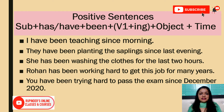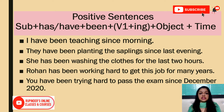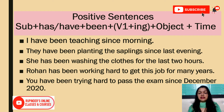So here we have positive sentences. The basic sentence structure of positive sentences is: Subject + has/have + been + V1-ing + object + time. Have a look at these examples.